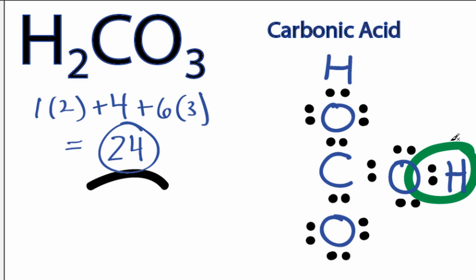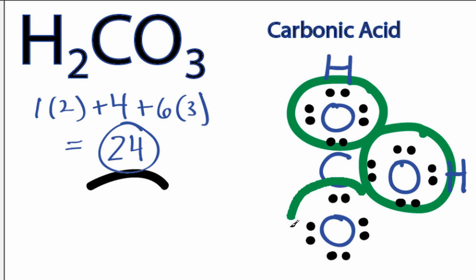At this point, the hydrogens have two valence electrons each, so their outer shells are full. And the oxygens have eight valence electrons each, so they have octets. Their outer shells are full as well.